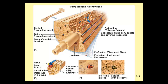Osteocytes maintain the bone — just because it's hardened doesn't mean it's no longer living. It is still a living tissue because it has a blood supply and nerves, and these cells survive in the hardened bone through tiny extensions called canaliculi. You can see the osteocytes with their purple nuclei and the canaliculi as cellular processes that allow them to communicate with one another.